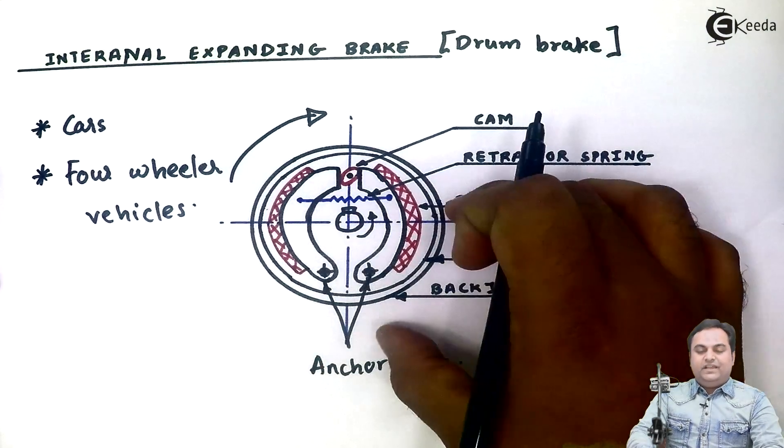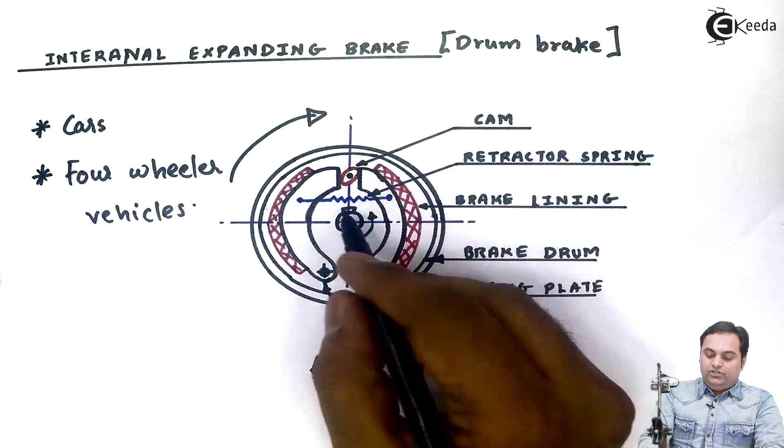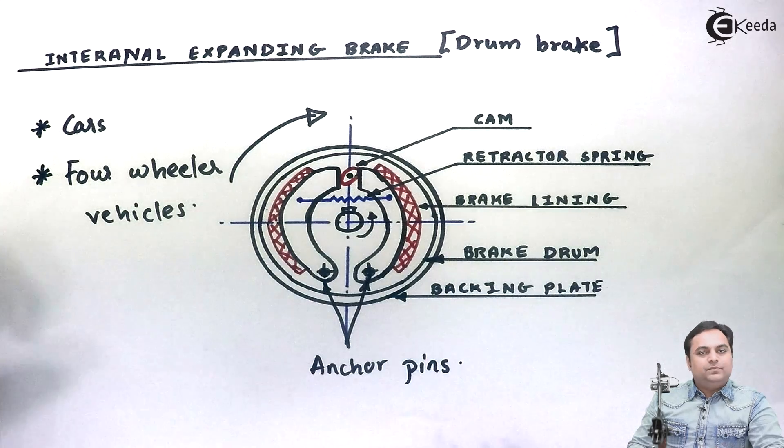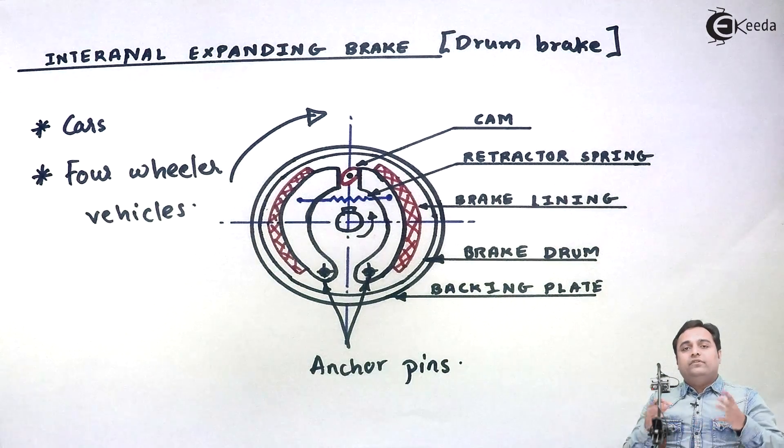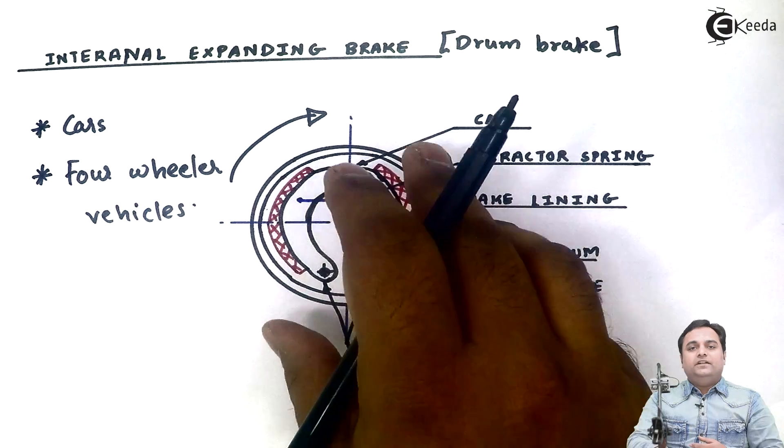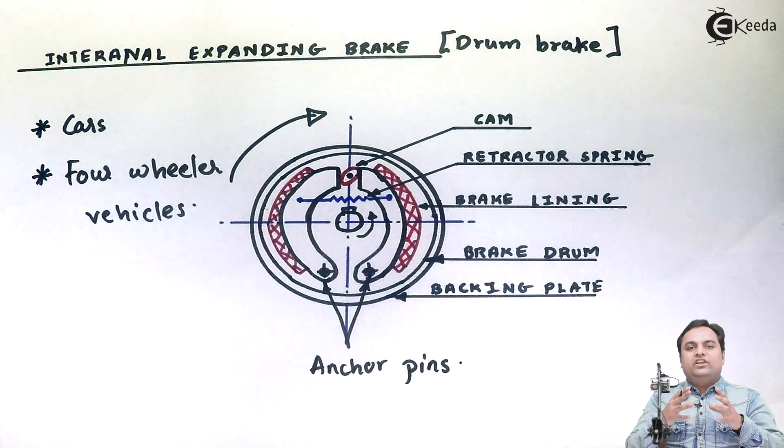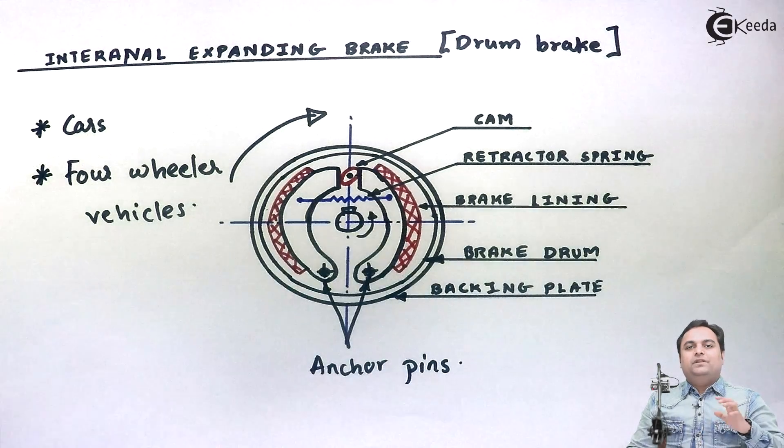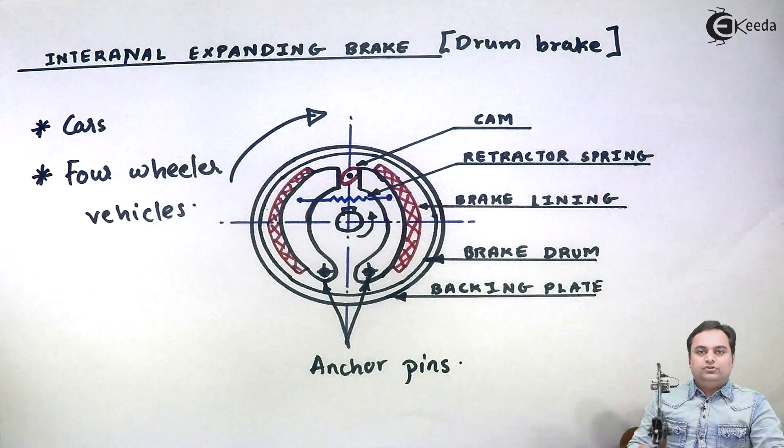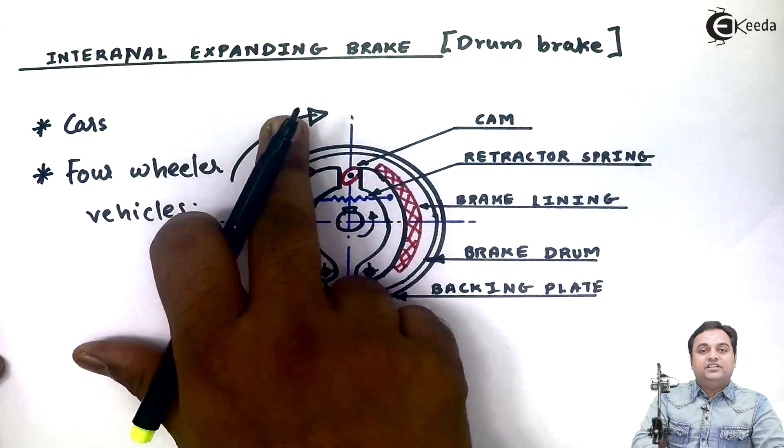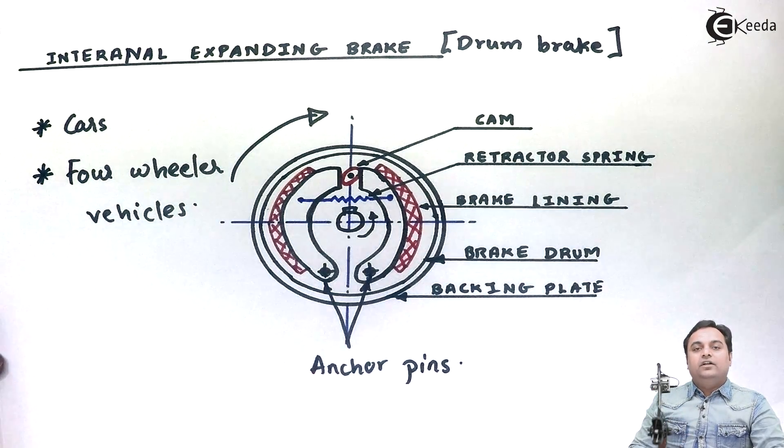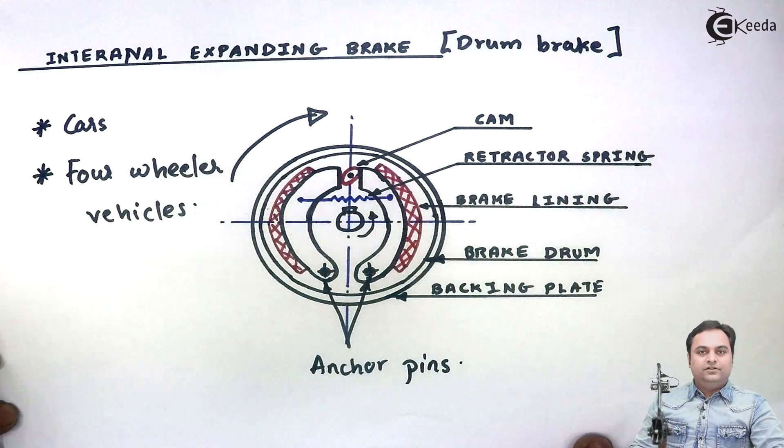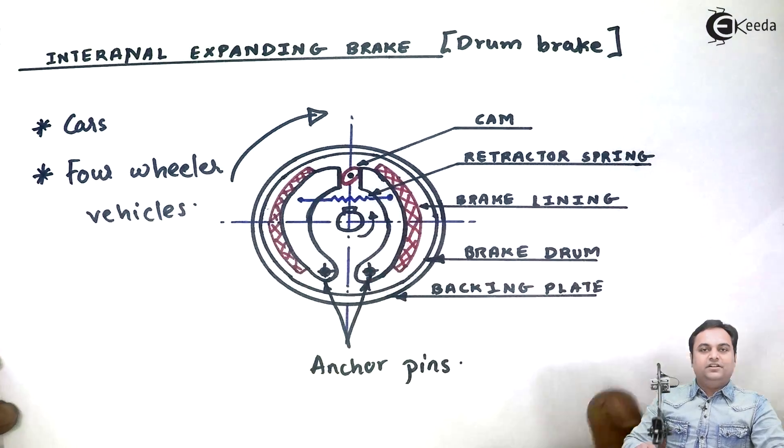The disadvantage of this brake is that the cooling of the brake is an issue. Because as we know, when braking action takes place, lot of heat is generated. Since internal expanding brake is enclosed, we can say it is very much closed. In that case what happens is that the brake doesn't get cooled effectively. So that is a disadvantage of internal expanding brake. And that is why to overcome that disadvantage, we are going on disc brake. So with this we complete internal expanding brake.